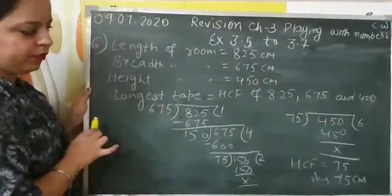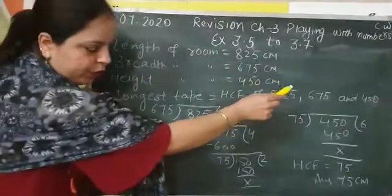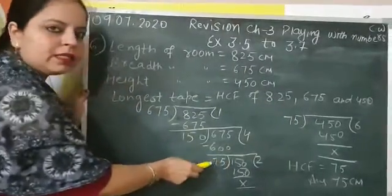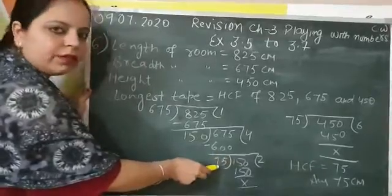That is 450. What you will do? You will divide that last left number 450 by their HCF. Means by 75.